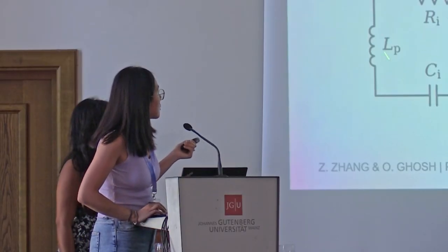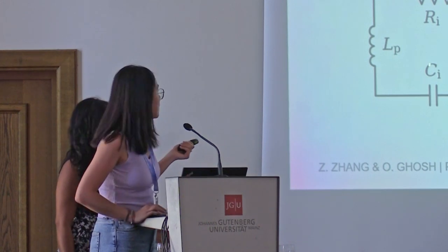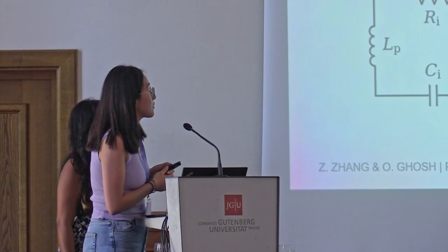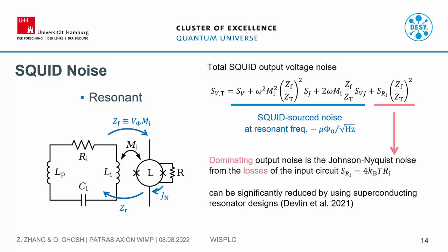For the resonant case, there is additional input capacitance as part of the LC circuit and also resistance representing the losses. We can look at the noise as two parts: one is the SQUID source noise from the voltage noise, current noise, and their correlation — calculated to be around the same order of magnitude as the flux noise measured in the lab. The other is the Johnson-Nyquist noise from the losses of the LC circuit, which is the dominating noise. However, this can be significantly reduced by using superconducting resonant designs, such as Devlin et al., who measured about minus 90 dB at 0.7 MHz, which converted to flux noise is negligible.